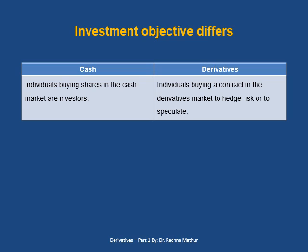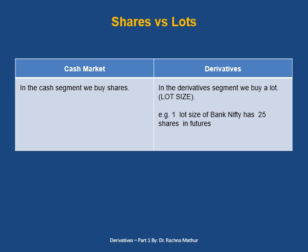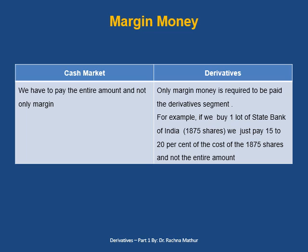Investment objectives of the two markets also differ. In the cash market, individuals buy shares and become investors. In derivatives, individuals buy contracts to hedge risk and to speculate. Regarding lot size: in the cash market, you are free to buy even one share or any number of shares. But in the derivative market, you must buy only the specified lot size — for example, one lot of Bank Nifty consists of 25 shares. Regarding margin money: in the cash market, you must pay the entire amount. But in the derivative market, you pay only the margin money — for instance, for one lot of State Bank of India shares (1,875 shares), you pay just 15 to 20% of the total cost.